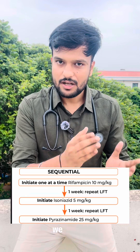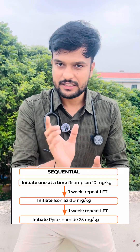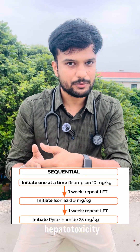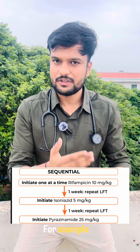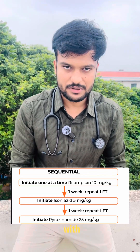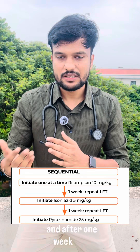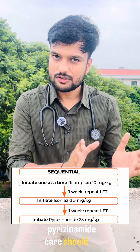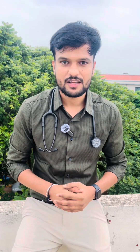What is the sequential method? In the sequential method, we initiate one drug after the other in a sequential manner — from the lowest level of hepatotoxicity to the highest level of hepatotoxicity. For example, we will start with rifampicin; after one week, we will start isoniazid; and after one more week, we will start pyrazinamide. Care should be taken that LFT remains normal during these switches.